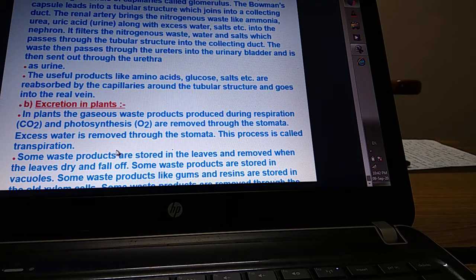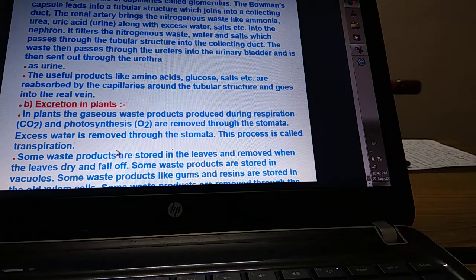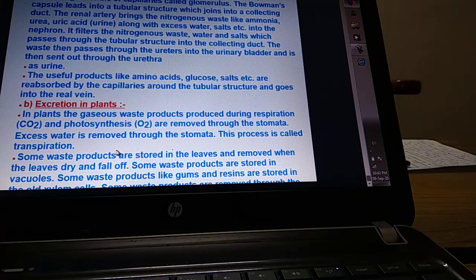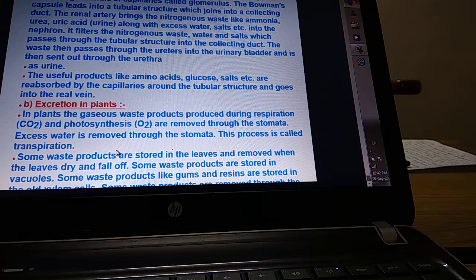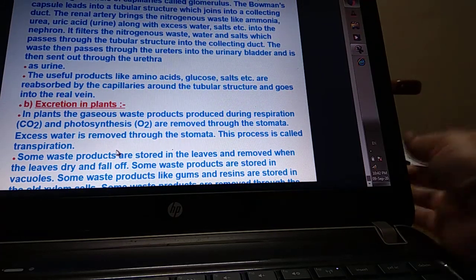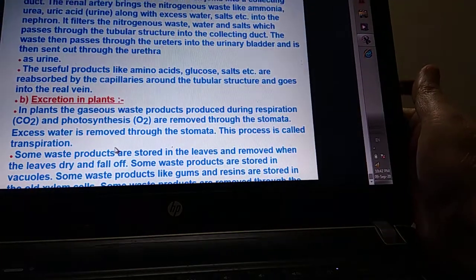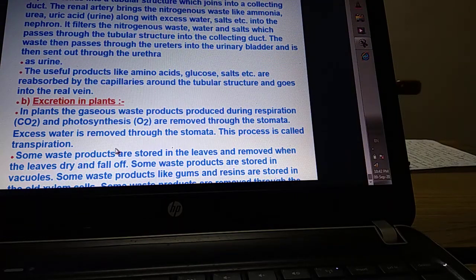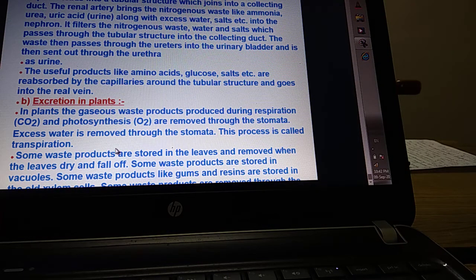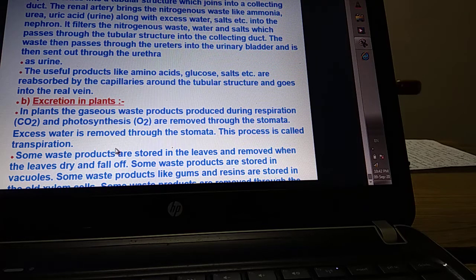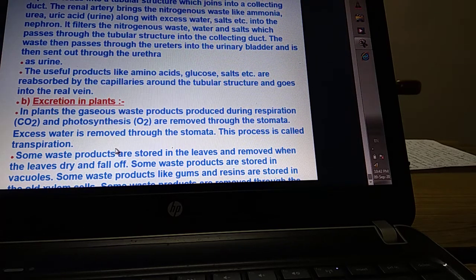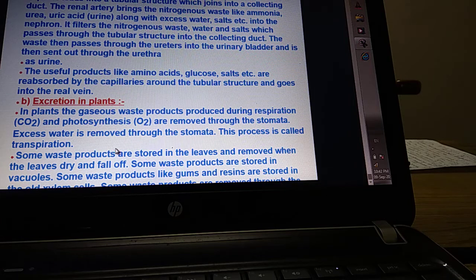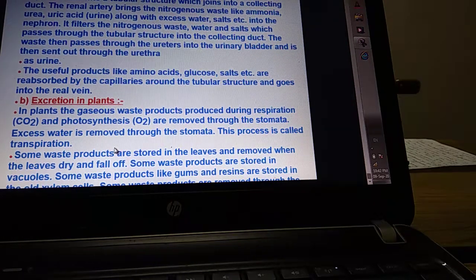Some waste products are stored in the leaves, and when the leaves dry and fall off, waste is removed. Some waste products are stored in vacuoles. Gums, resins, latex, and different oils are also wastes of plants. Some plants remove waste from the roots into the soil. So there are different ways to remove waste by plants. Thank you so much.